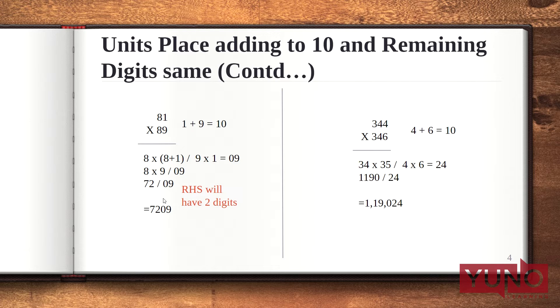Now my final answer will form 7209. So 81 multiplied with 89 gives 7209.